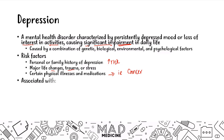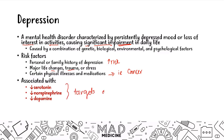Depression is associated with many things, but the main things you need to know at a neurotransmitter level is that it's associated with decreased levels of serotonin, norepinephrine, and dopamine. These are the main targets of the drugs we use to treat depression, because what you want to do is increase the levels of all of these neurotransmitters in order to relieve a person's depression.